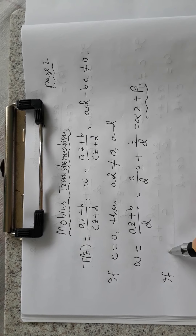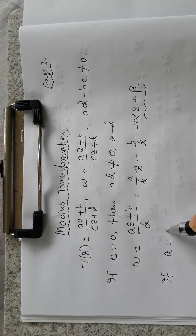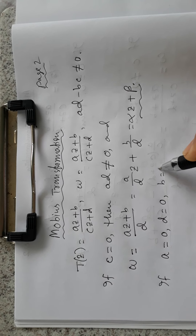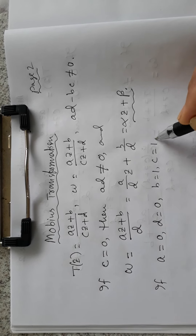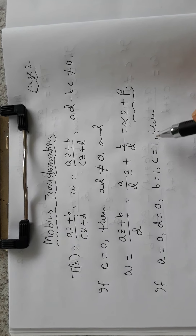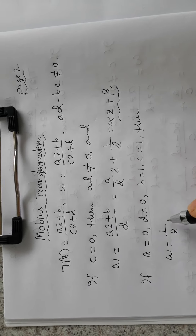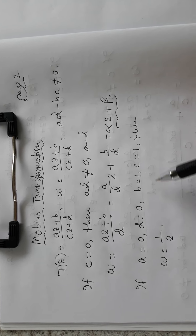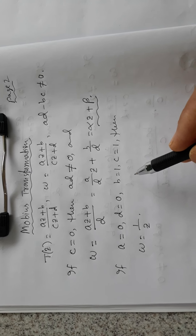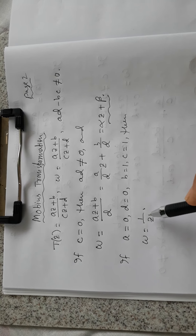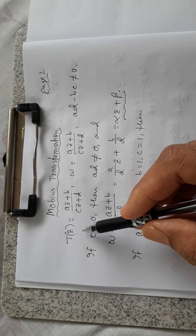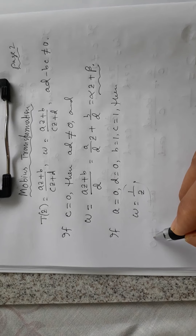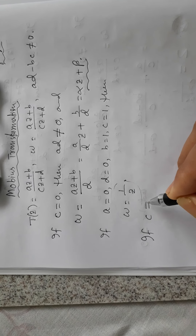Now if a = 0, d = 0, b = 1, and c = 1, then w is nothing but 1/z, and ad is zero while bc is one, so ad minus bc is not equal to zero. Therefore the inverse transformation is a special case of the Möbius transformation.